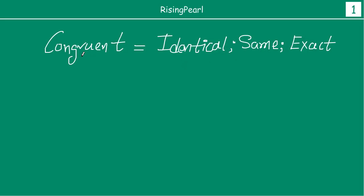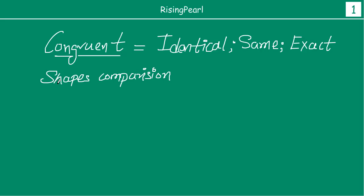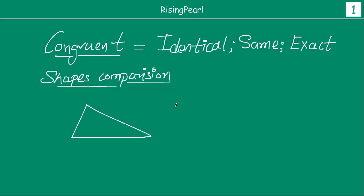One more thing you notice: when we talk about congruent, we talk about shapes and shape comparison. Specifically, when we compare these shapes, we say if they are congruent or they are not congruent — that means we say both shapes are identical, same, or exact. So if we give you one shape which is a triangle, and then we give you a rectangle...